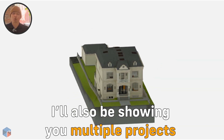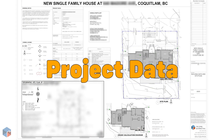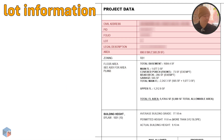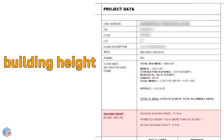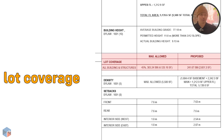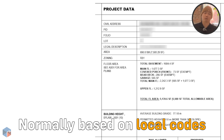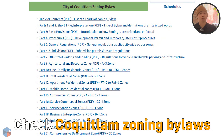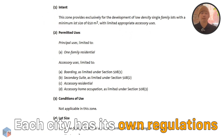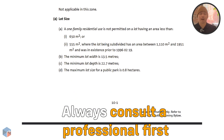Take note, I'll be showing you multiple projects we've handled as examples later on. Here we have the project data. This part includes the lot information, zoning, total floor area for each floor, building height, wall coverage, density, and setbacks. Normally, project data is based on local codes. For example, this project is located in Coquitlam, so you have to check the zoning bylaw regulated in the city of Coquitlam. Always remember that each city has different regulations you need to follow, so it's best to consult with a professional first as they are adept with the codes.